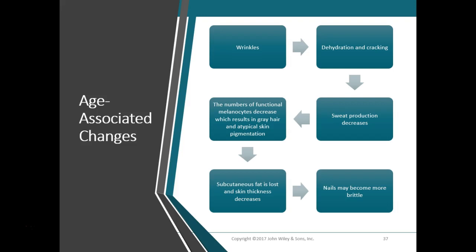Fibroblasts normally produce a lot of collagen and elastic fibers so we retain the ability to stretch and recoil, but these fibroblasts decrease in number, so we produce fewer of those fibers. As a result, the skin starts to develop crevices and furrows commonly called wrinkles. The pronounced effects of skin aging don't become noticeable until people are in their later 40s. Macrophages decrease in number and become less efficient, so the immune system becomes less responsive. Decreased sebaceous gland size leads to dry skin that is easily broken or damaged.